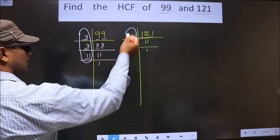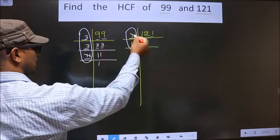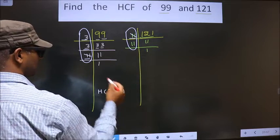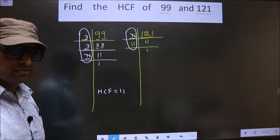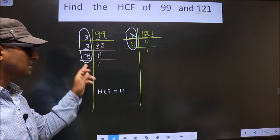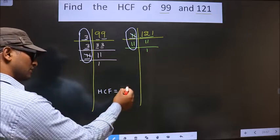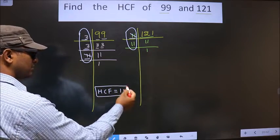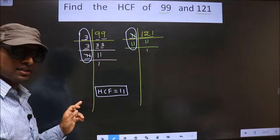Next number is 11. Do we have 11 here? Yes. So you cut 11 and write here. No more numbers are left. Therefore, only one number, 11, is present in these two places. So this is our HCF. Am I clear?